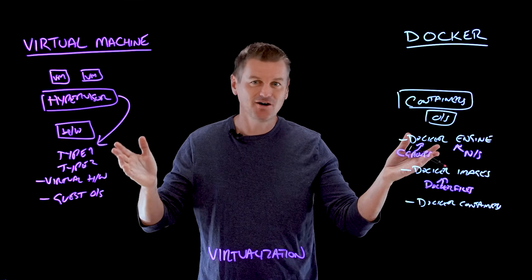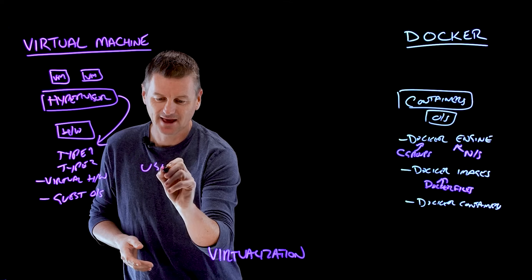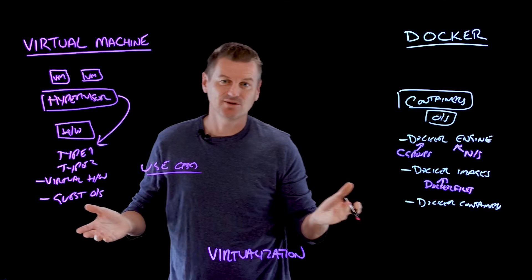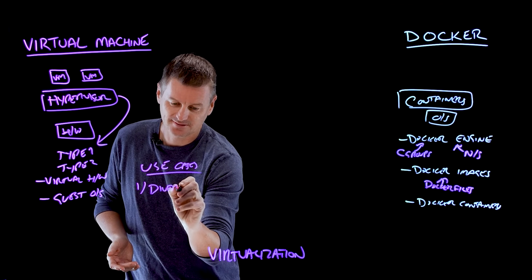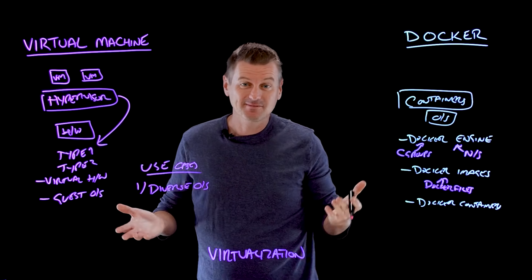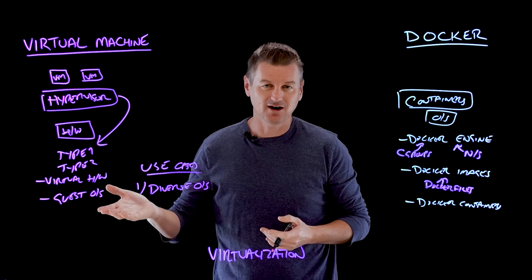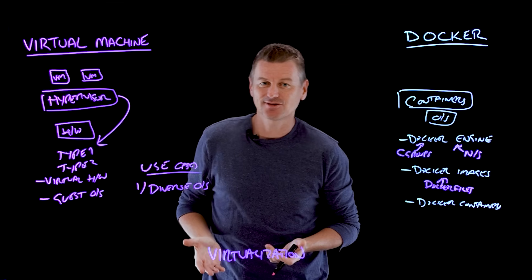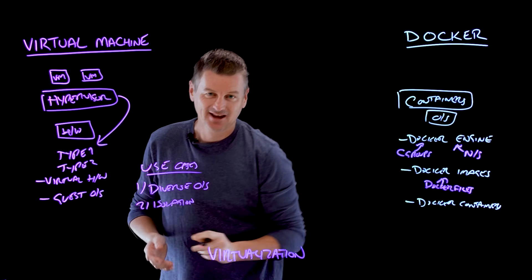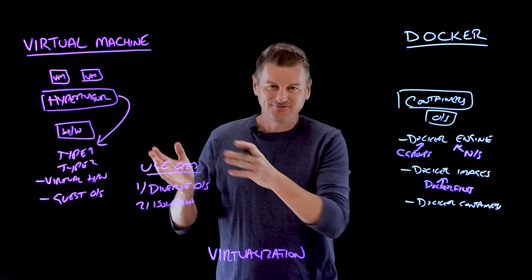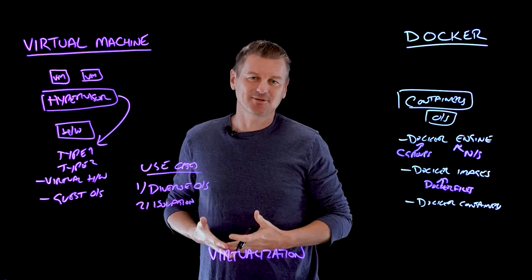When to pick one over the other? While the choice isn't always black and white, here are some common use cases for VMs. Number one — the obvious one — is diverse operating systems. VMs let you run different operating systems, like Windows on one VM and Linux on another, all on the same hardware. That's handy when testing applications across multiple platforms. A second big advantage is isolation, since each VM runs its own separate kernel and operating system.